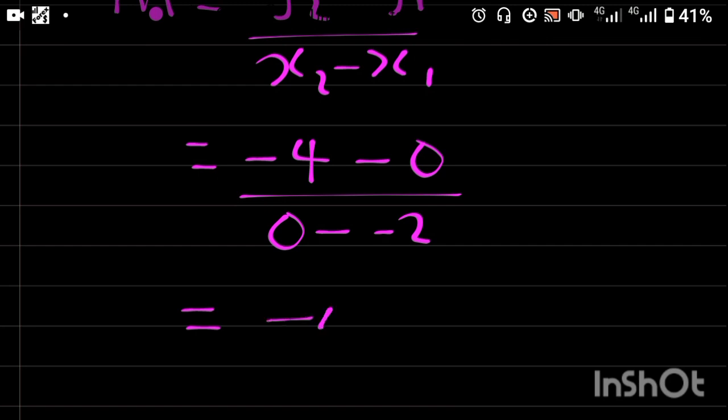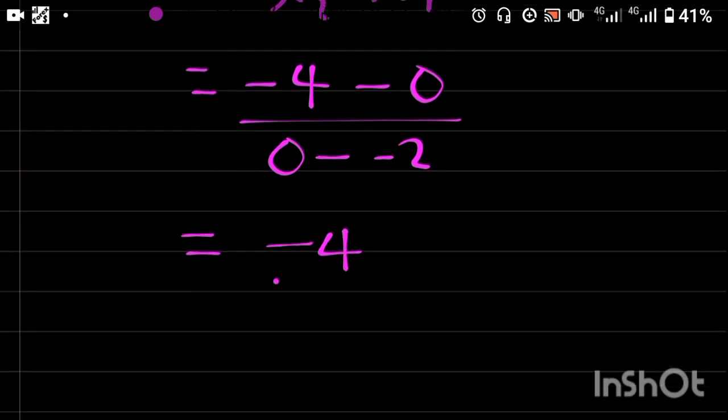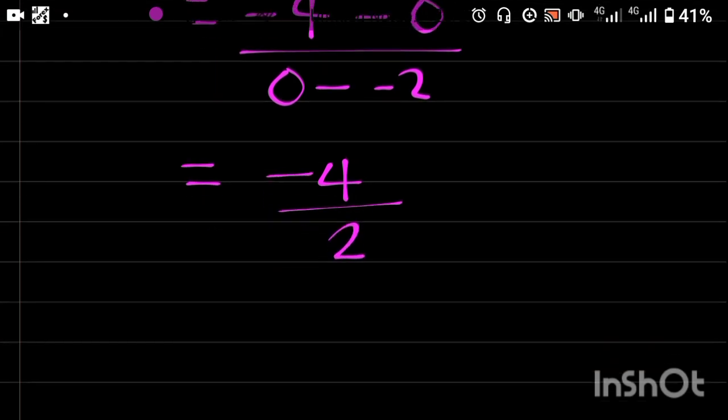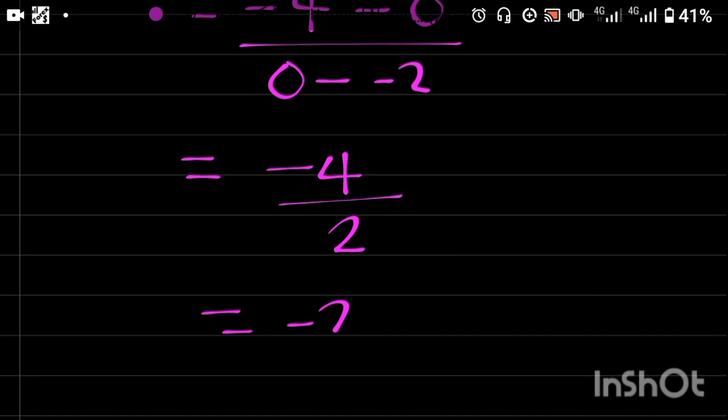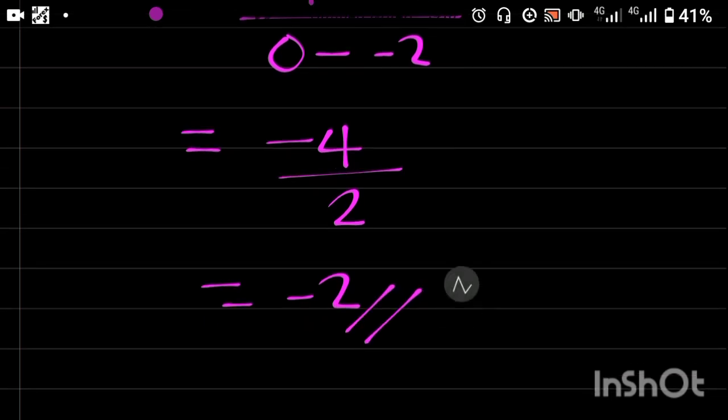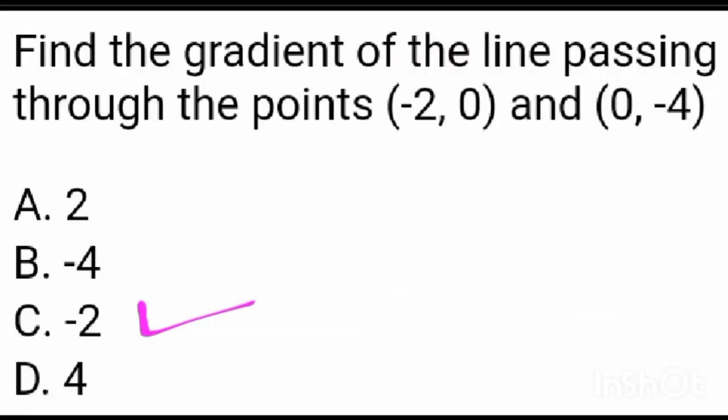-4 minus 0 is -4, all over 0 minus -2, that's 2. -4 divided by 2, the answer is -2. This is a negative slope. It means that it is a line that is slanting like this. Option C is the correct answer.